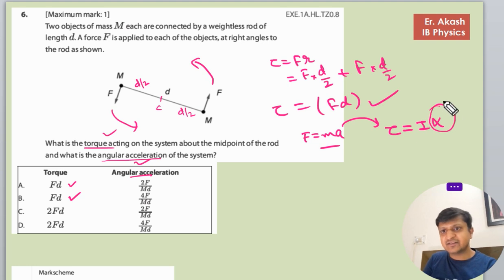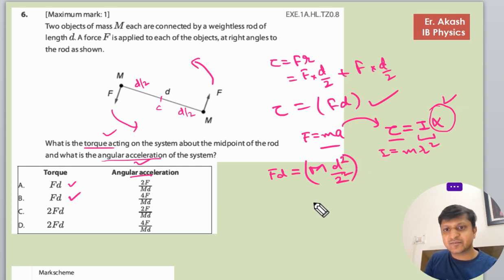This is the angular acceleration that we have to find in this question. So this torque is Fd. Fd equals to, and the I, you know the I, that is inertia for the point object is mr squared. So m is the mass and d by 2 is the radius, and this will be the square of the radius. So I have put it square in the d and the 2.